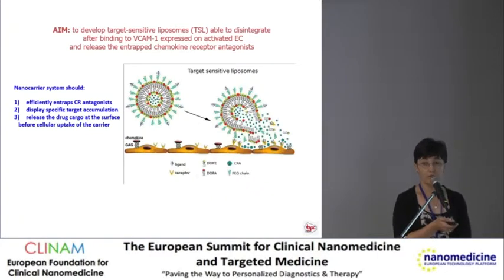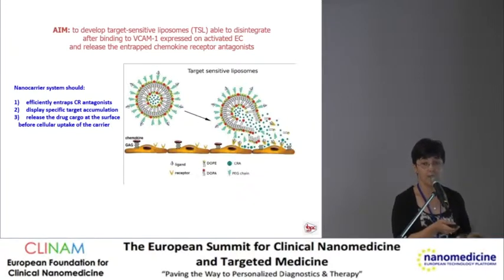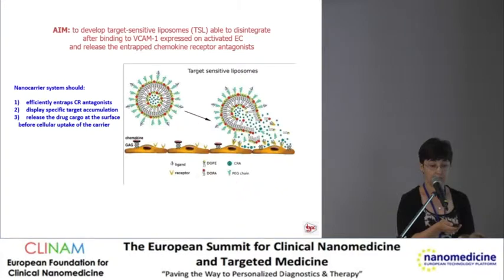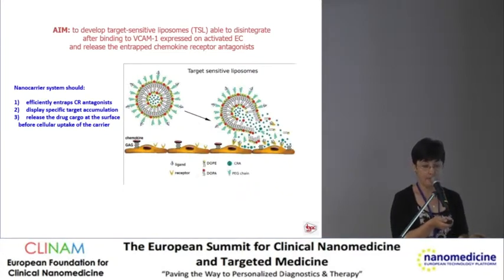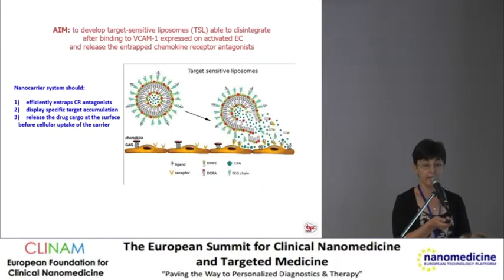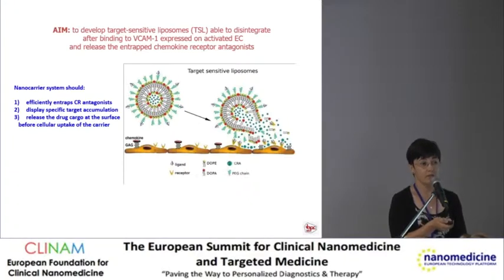To develop a liposomal carrier system able to interfere with the chemokine network at the surface of activated endothelial cells, nanocarrier systems should efficiently encapsulate chemokine receptor antagonists, display specific target accumulation at the endothelial surface, and release the cargo before cellular uptake. We chose target-sensitive liposomes, combining vascular targetability with triggered release at the endothelial surface, using the principle described by Liv Huang, and adapted the pegylation to increase circulation in blood.